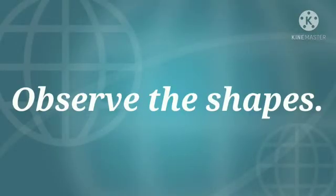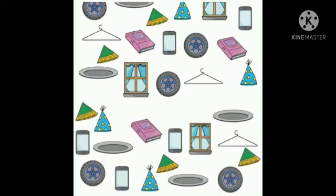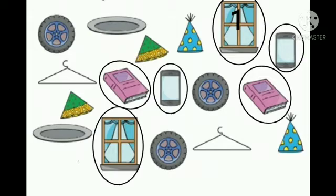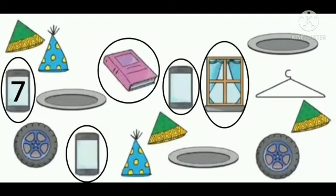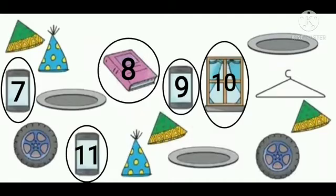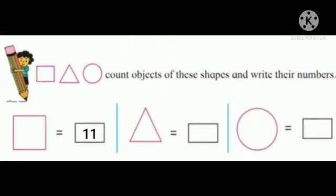Observe the shapes. Students, count the objects of rectangle shape: 1, 2, 3, 4, 5, 6, 7, 8, 9, 10, 11. So students, the objects of rectangle shapes are 11.